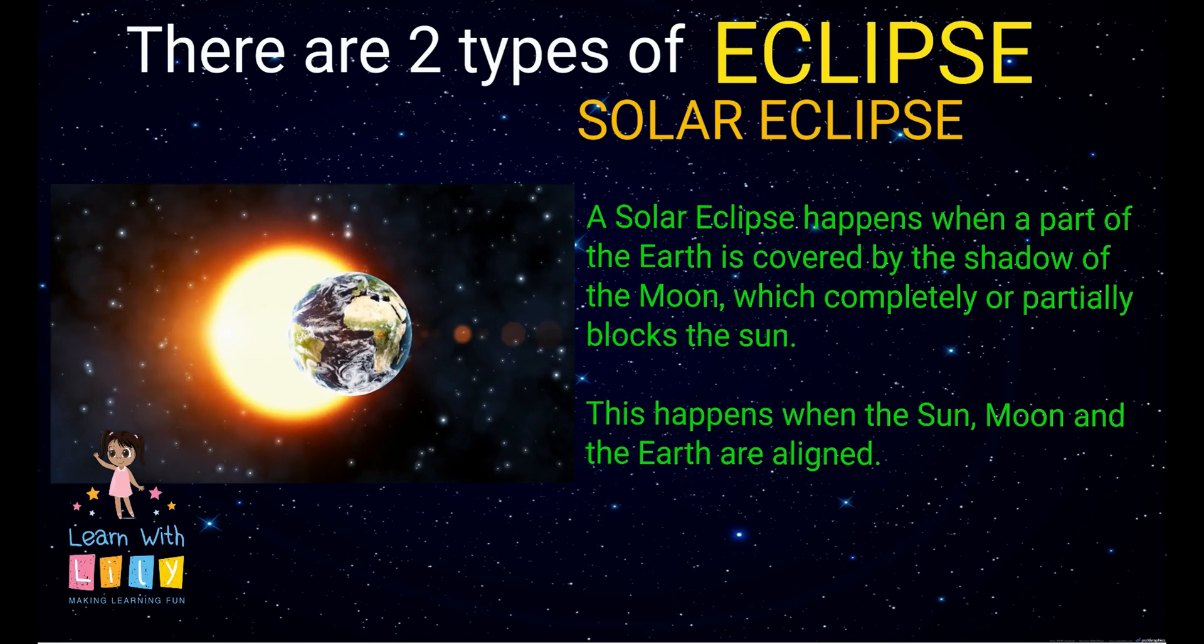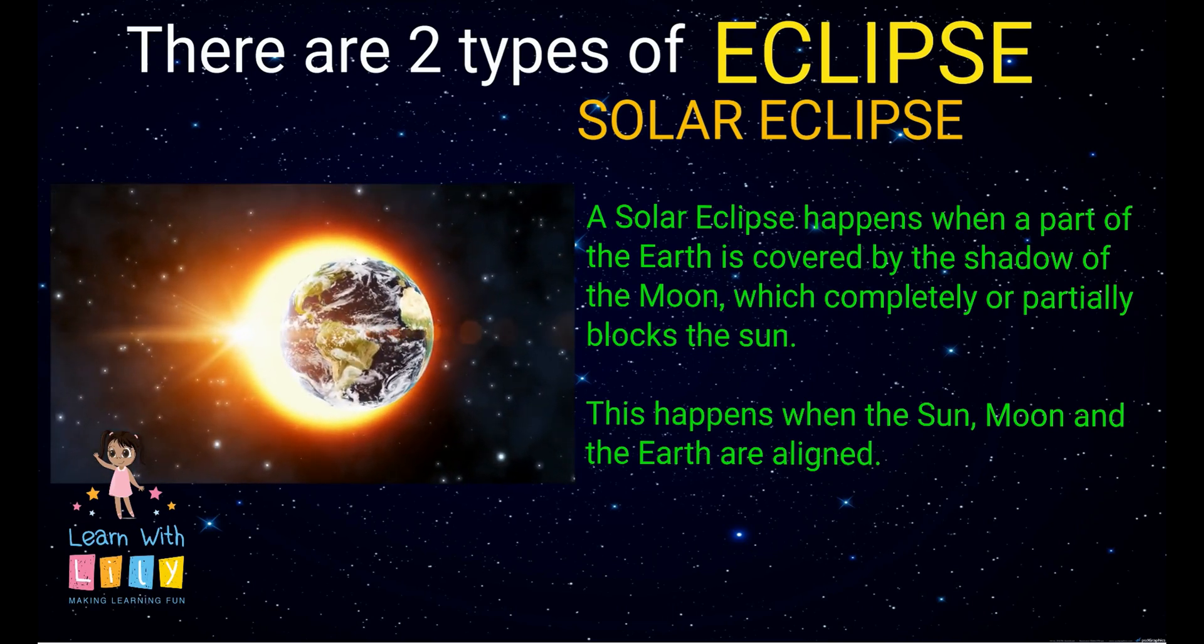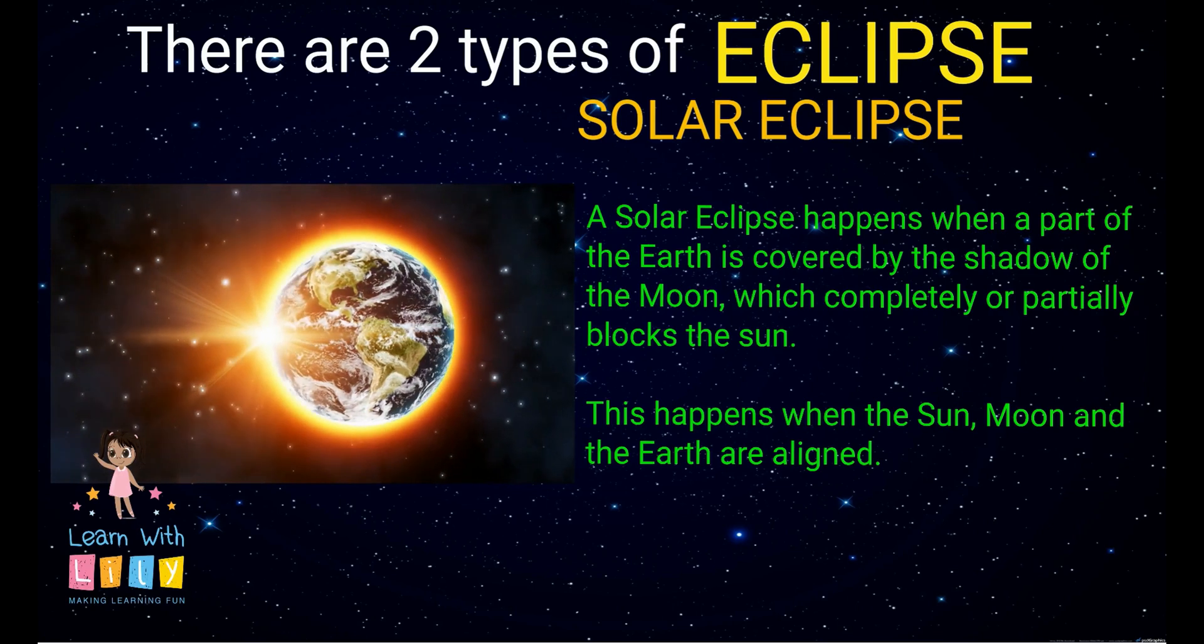This happens when the Sun, the Moon, and the Earth are aligned. That means they're all in a row directly in front of each other.